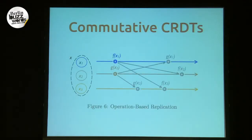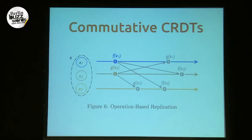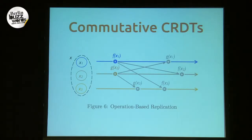Commutative CRDTs forward operations rather than state. Obviously if an operation is not delivered or applied out of order locally, the states won't converge. However, unlike the convergent type, you have a reliable broadcast channel, so you have assurances that messages will eventually be delivered. So as long as those two functions f and g — now actual operations rather than state modifications — commute when happening concurrently, the state will converge.